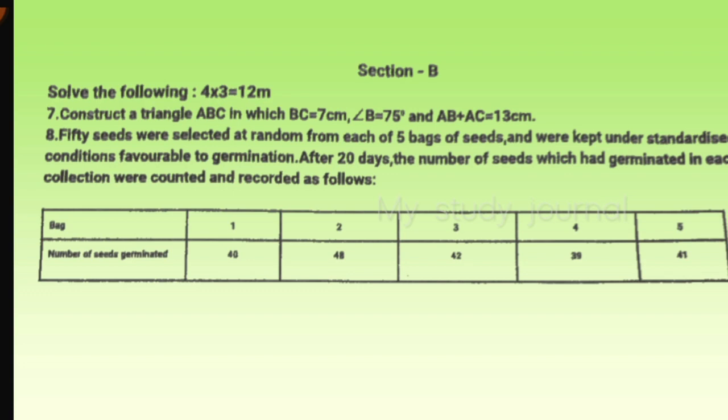Just see carefully what is given - we have to read the question twice or thrice. Moving to the eighth question: fifty seeds were selected at random from each of five bags of seeds and were kept under standardized conditions favorable to germination. After 20 days, the number of seeds which had germinated in each collection were counted and recorded.